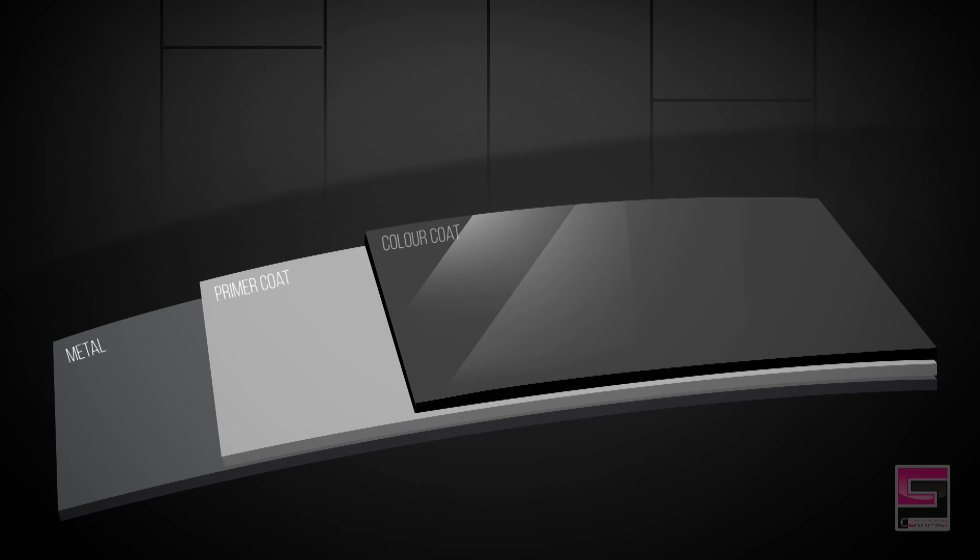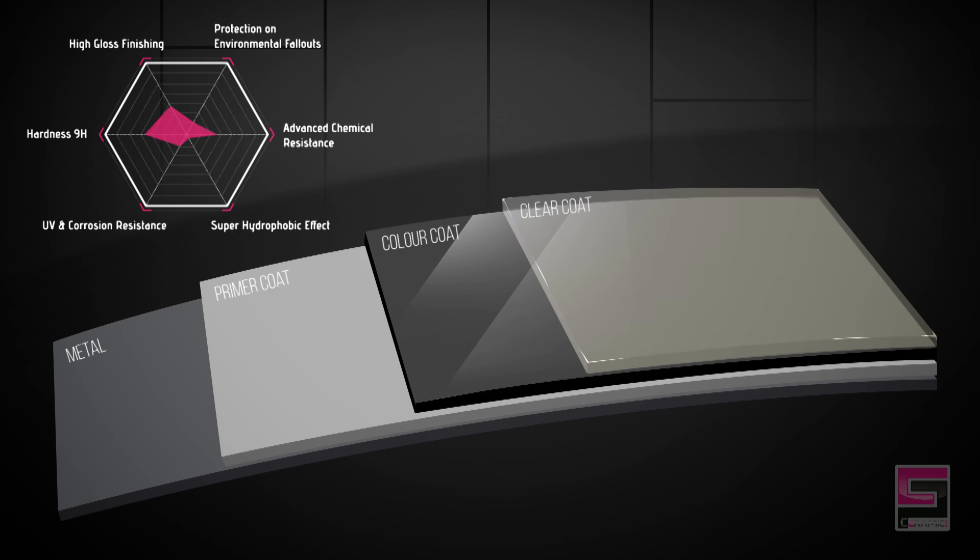Let's take a look at your normal car paint structures. The layer of primer coat added up to the clear coat, it only achieves a low level of hardness range from 4 to 5 in Mohs scale.